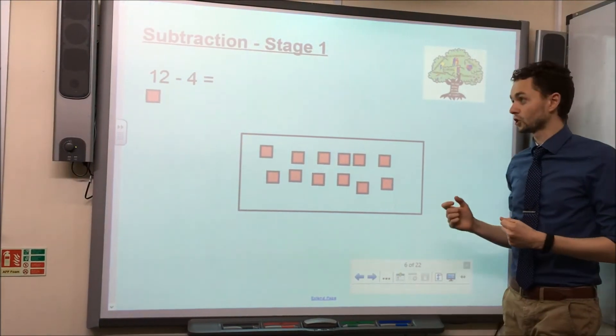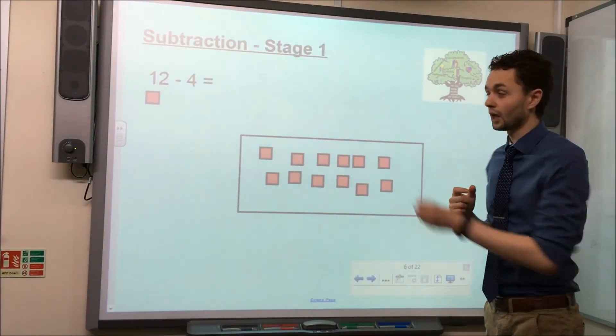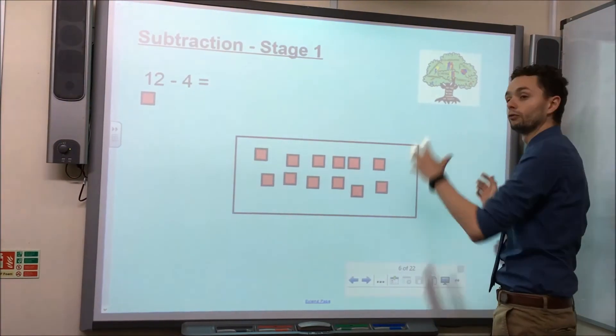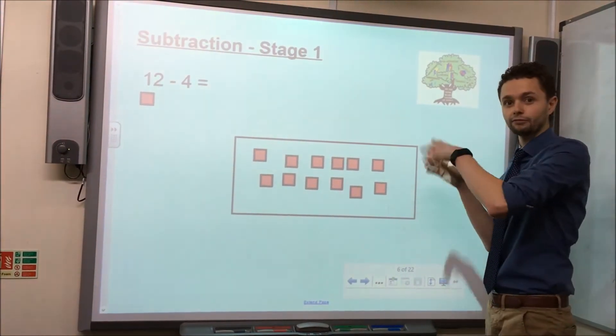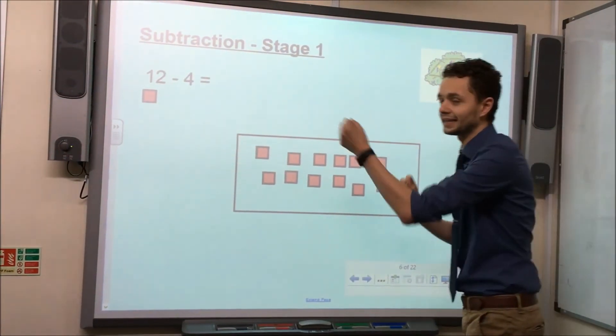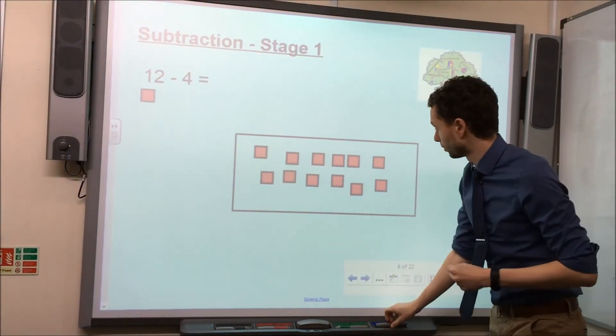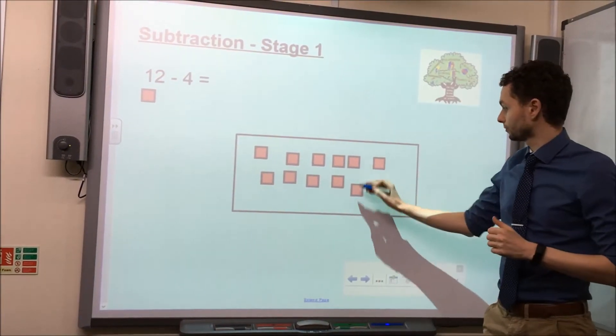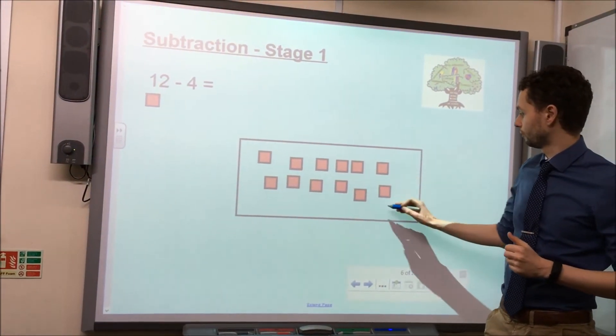The next step is for the children to take away 4 objects or to block them off, cover them up, however it's best for them to visualize taking away that 4. So I'm going to draw a little ring around 4 counters. 1, 2, 3, 4.